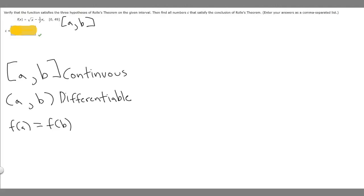In this problem we're told to verify that the function satisfies the three hypotheses of Rolle's theorem on the given interval. Then find all numbers c that satisfy the conclusion of Rolle's theorem.